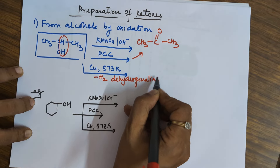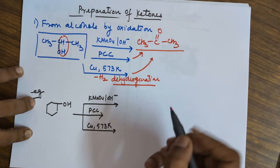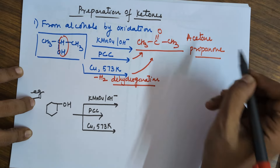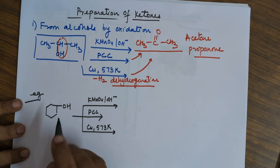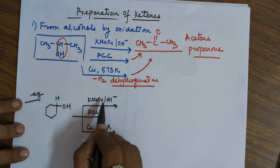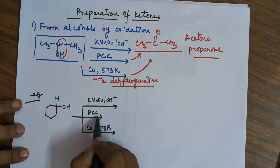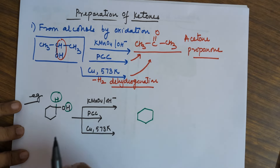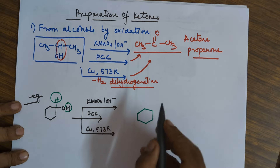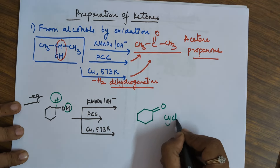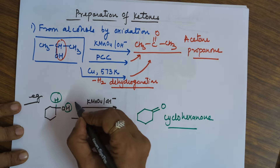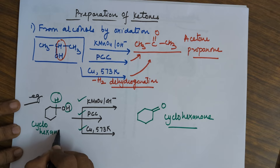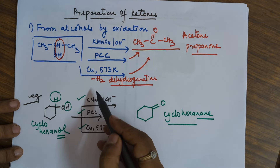Copper at 573 K helps in dehydrogenation, again leading to the ketone which in this case is acetone as the common name, propanone as the IUPAC name. Taking a cyclic compound — you have this cyclic compound and this carbon also has an H. In the presence of PCC or copper at 573 K, the two hydrogens are removed. With KMnO4 as an oxidizing agent also, hydrogens are removed and you end up with a C=O — that is cyclohexanone. So, all three reagents can convert the cyclic alcohol to cyclohexanone.